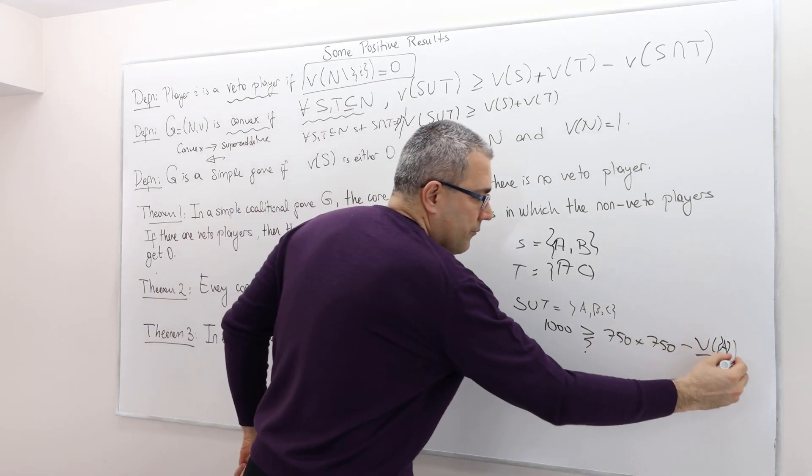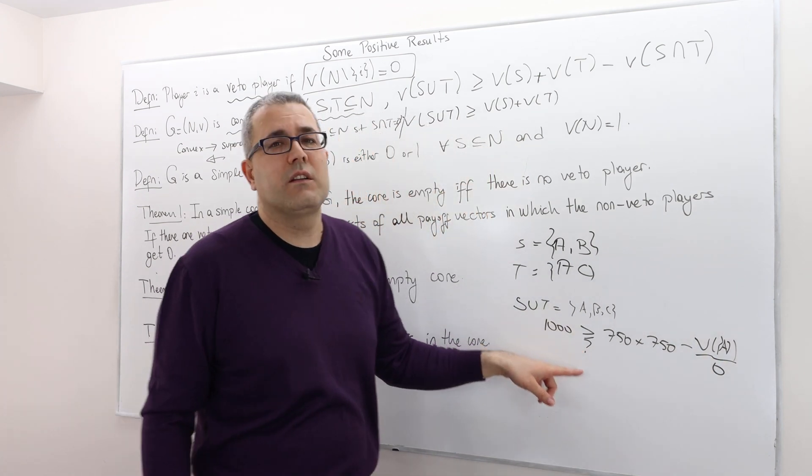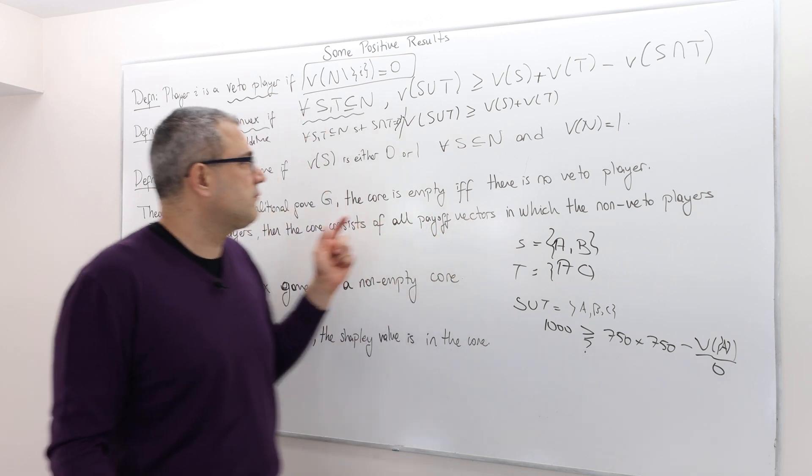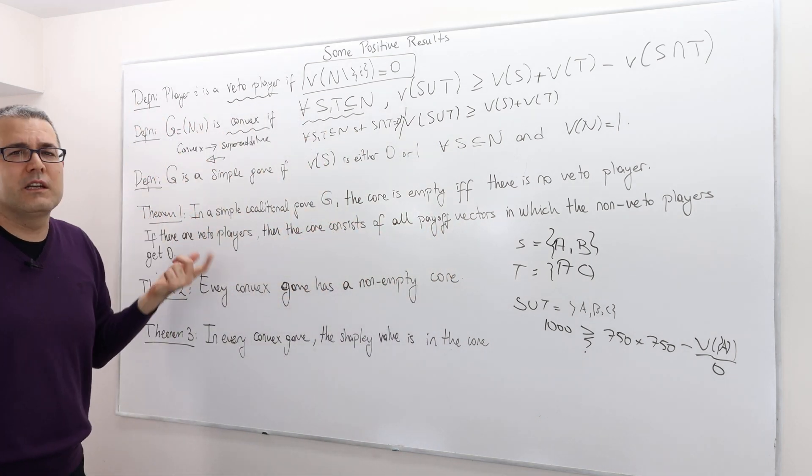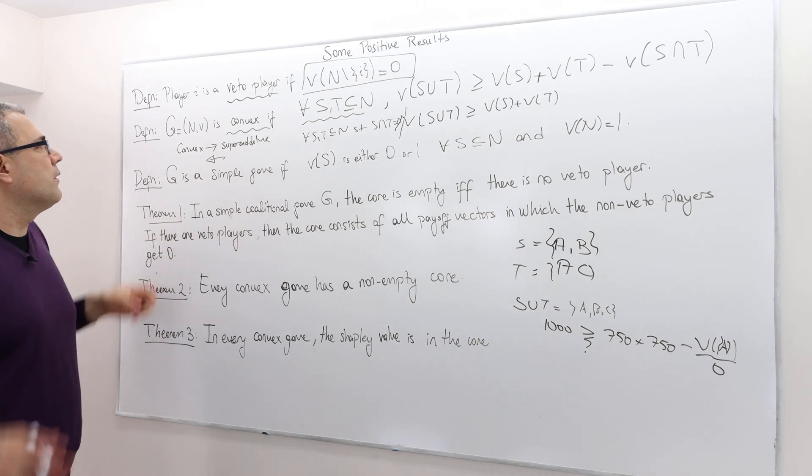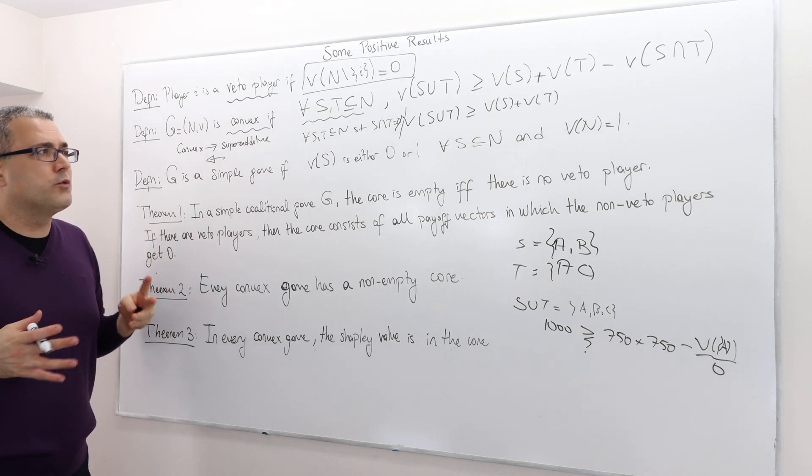So 1,000 is not greater than or equal to 1,500. So therefore, the ice cream example fails to be convex, though it is superadditive. Okay? So convexity is stronger than superadditivity. But convex games are very, very useful, as you will see in the following theorems.